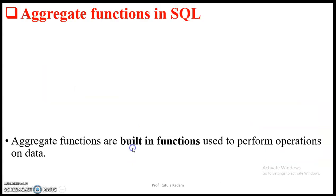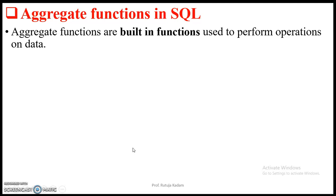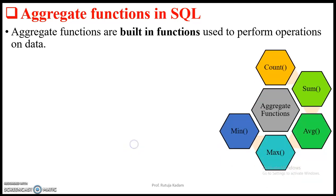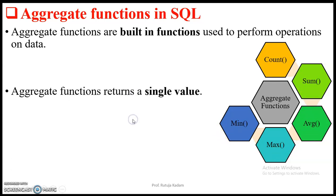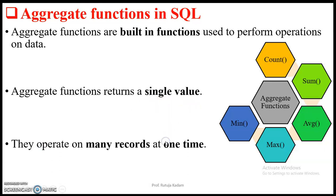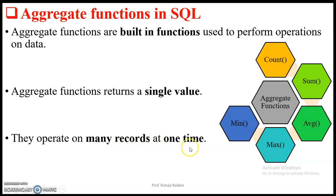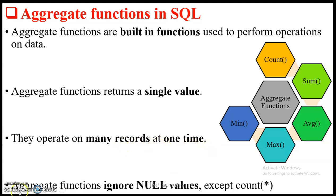What are these aggregate functions? These functions are basically built-in functions used to perform operations on the data. The aggregate functions in SQL are COUNT, SUM, average function, maximum function, and minimum function. These functions return a single value and they operate on many records at one time. The aggregate functions ignore null values, except for the COUNT(*) query.